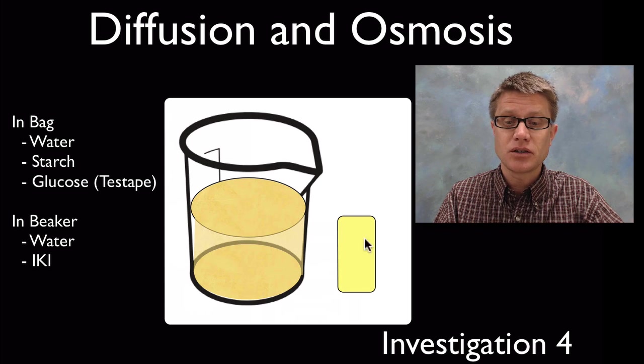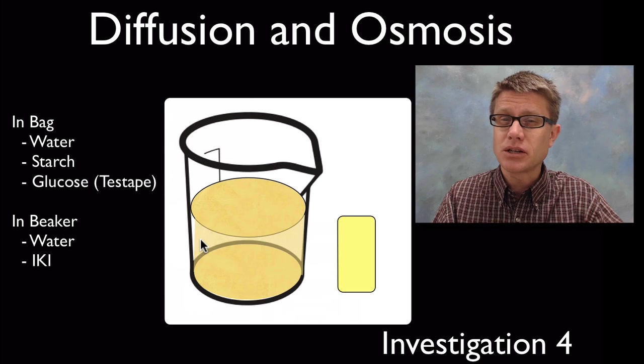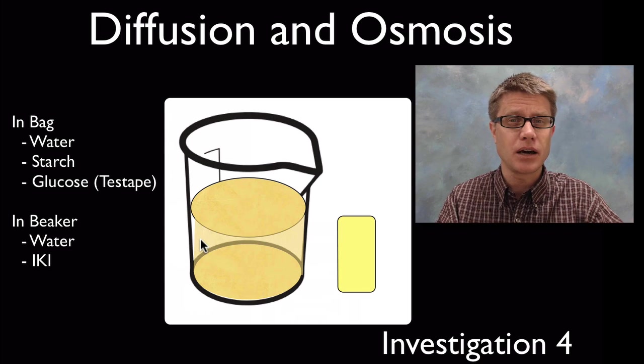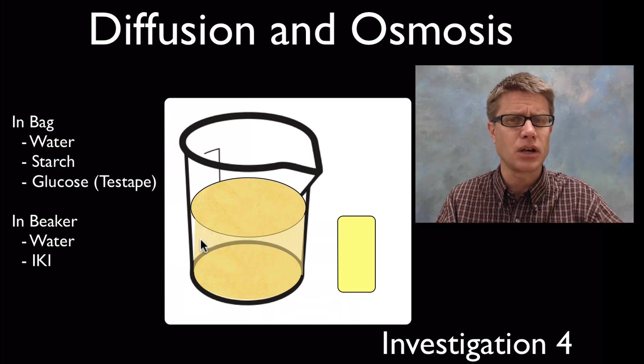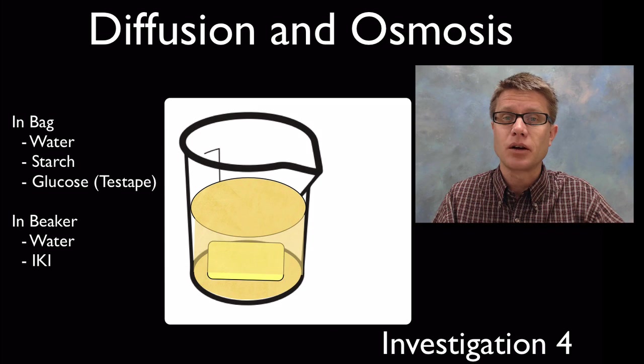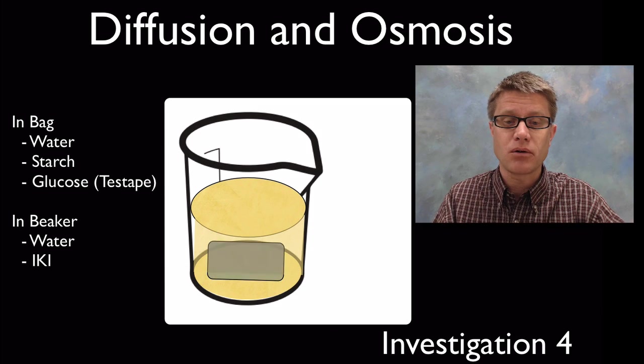So again, what do we have in here? Starch, water, glucose. What do we have out here? Water and IKI. One thing I should tell you is if starch and IKI are ever in the same place, it's going to turn kind of a bluish color. So what we then did is put it inside our beaker and let it sit. This takes about an hour. What happens is this turns blue.